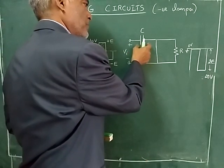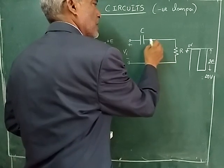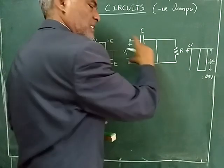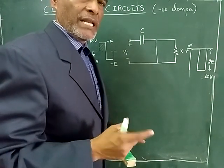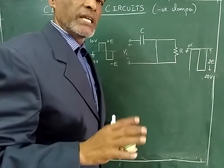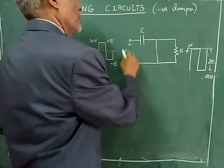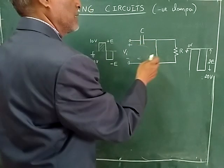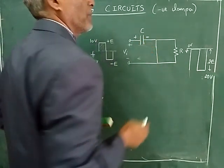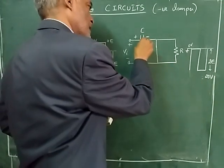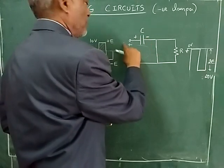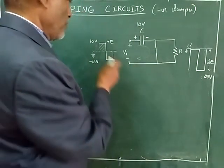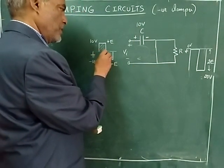Since the diode is a short circuit, the entire input voltage Vin appears across the capacitor. The capacitor is shunted across Vm, so the time constant is essentially zero and it gets fully charged almost instantly. During the positive half cycle, current flows such that the capacitor charges to the input voltage — for example, if the input is plus 10 volts, the capacitor charges to 10 volts with that polarity.